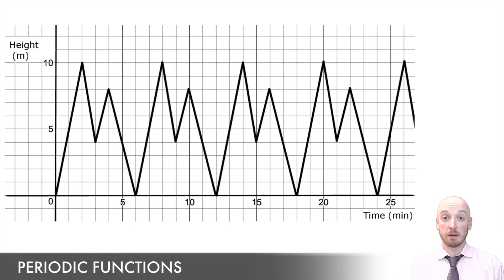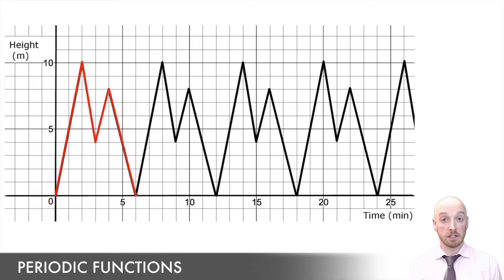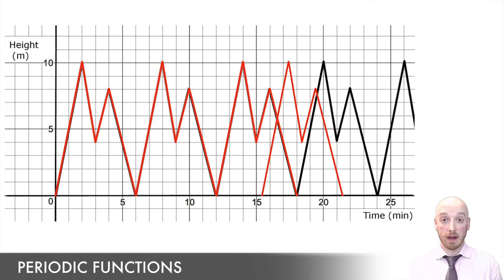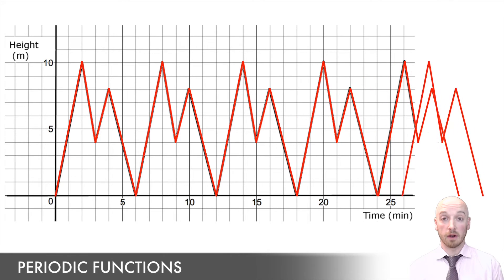When we talk about periodic functions, we're talking about the type of function that's made up of different lines that form a repeating pattern over the course of time. These functions are going to be represented on a graph. When you see a pattern of lines that you can then see repeat on a graph, you've just identified a periodic function.